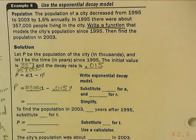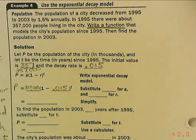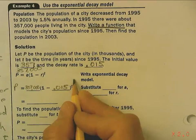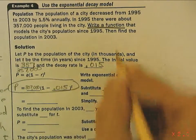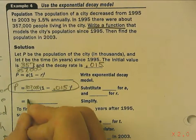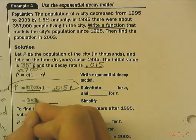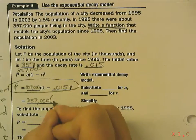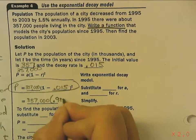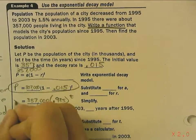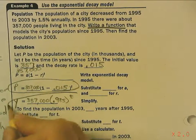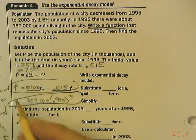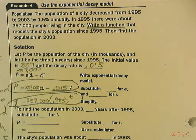So, you can leave this either as your function, or you could change it. Actually, subtract .015 and get .985 to the t, but this would also be the function. You can put p, or you can put y. It really doesn't matter.